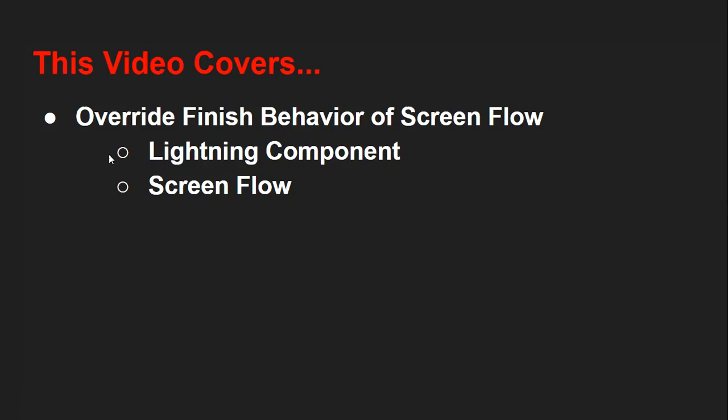If you use a ScreenFlow, at the end of the screen you may find a finish button. So if you want to do some operation — like if you are creating a record through ScreenFlow and then you want to redirect your control to that newly created record — you can do that by overriding the finish button of the ScreenFlow.